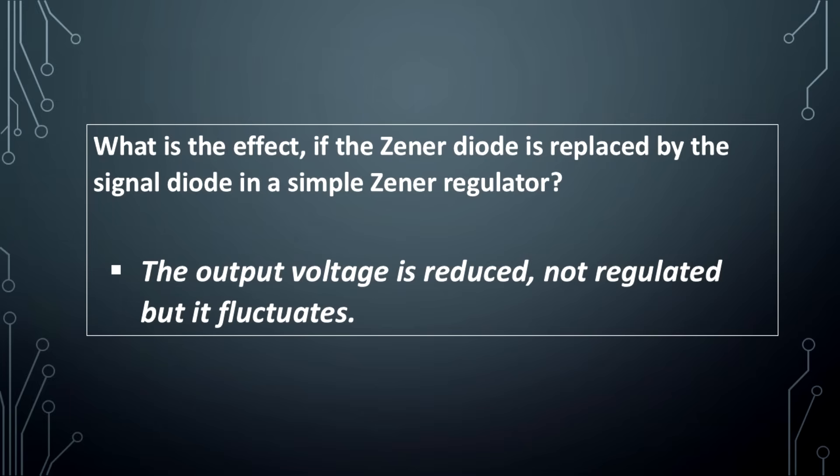What is the effect if the zener diode is replaced by the signal diode in a simple zener regulator? The output voltage is reduced, not regulated but it fluctuates.